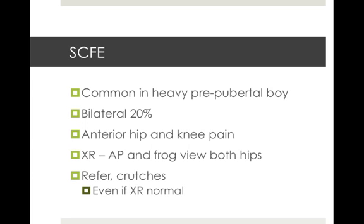Slipped capital femoral epiphysis is more common in the heavy pre-pubertal boy — Murtagh describes it as the overweight and under-sexed lad. It can be bilateral in 20% of cases and they'll present with anterior hip and knee pain on that side. The x-ray views of choice are AP and frog view of both hips. Refer if suspected, and use crutches — even if the x-ray is normal, if you have clinical suspicion then send them on.